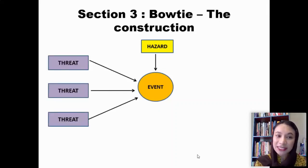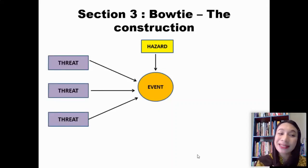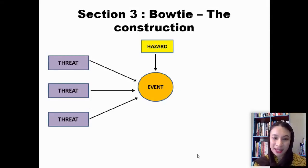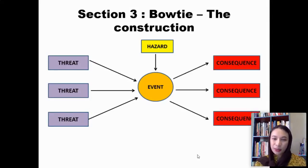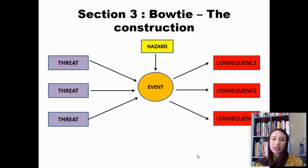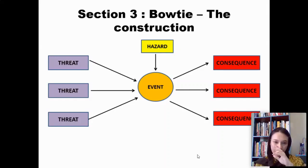Then you need to track the left side of the bowtie, which helps you identify what are the potential threats — the potential causes that could lead to the event. And from the event, you assess what are the consequences, the results, the outcomes coming from the unwanted or abnormal event.